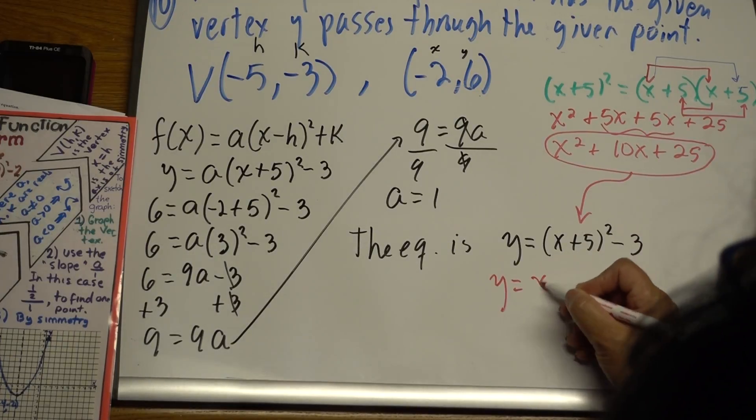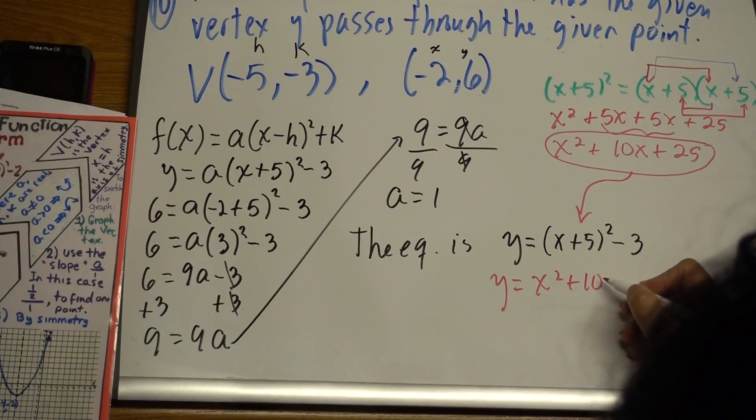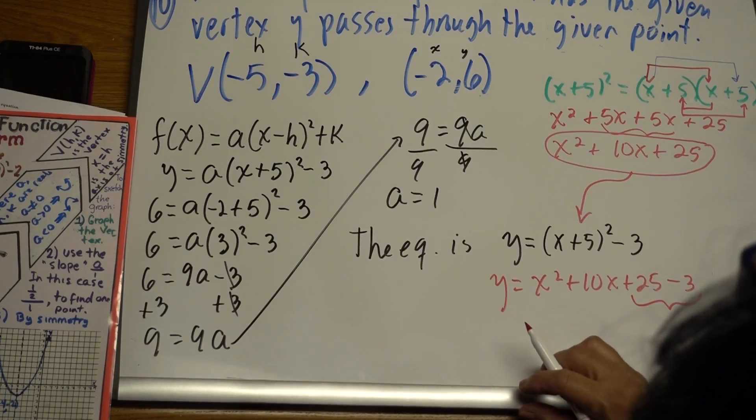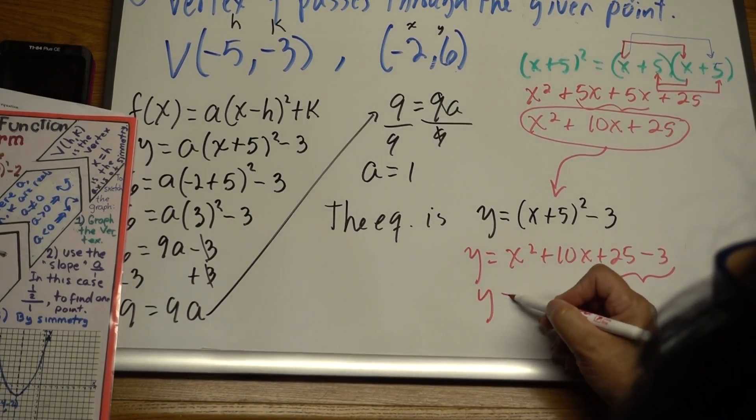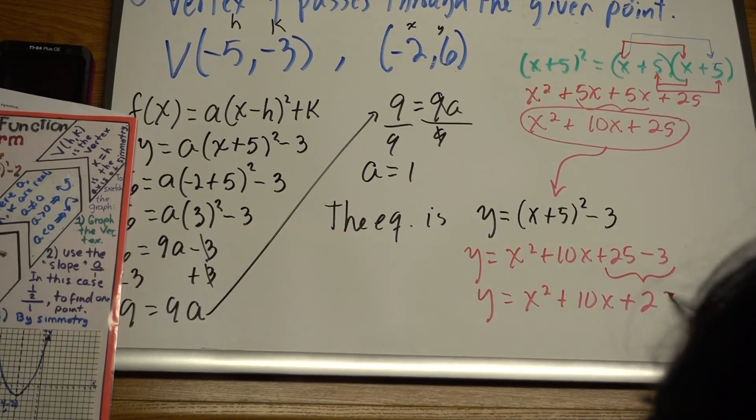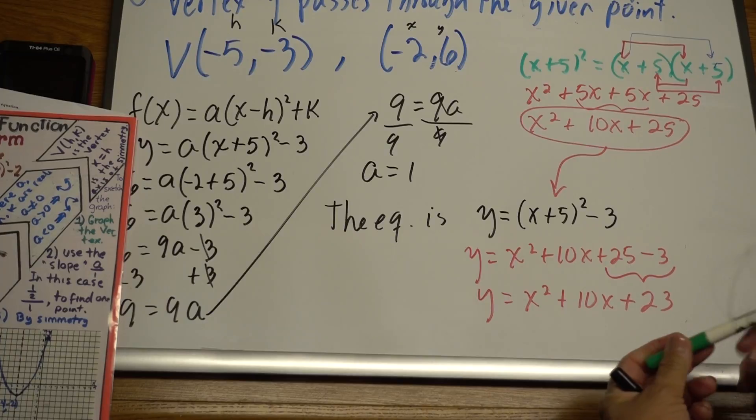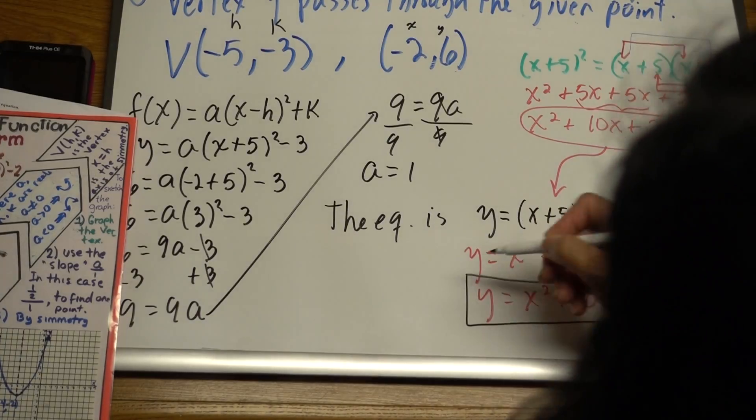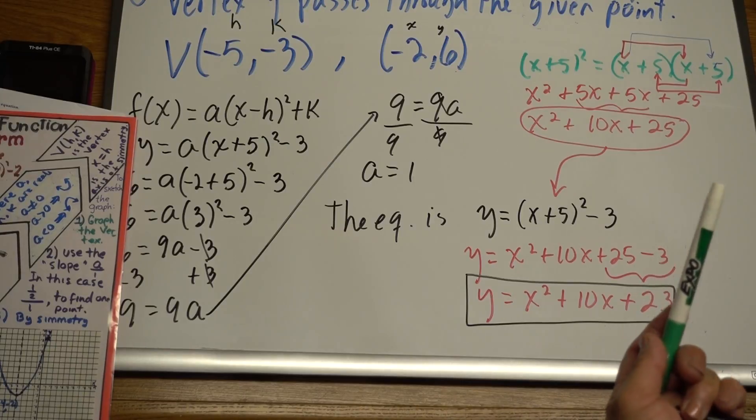Just to find the answer in the back, we have x squared plus 10x plus 25 minus 3. And right here, you notice these two are like terms. So one more step will be y equals x squared plus 10x plus 22, which is the answer in the back of the review. I left the answers there so you guys can check your work. Thank you.